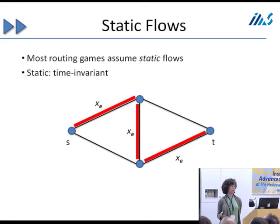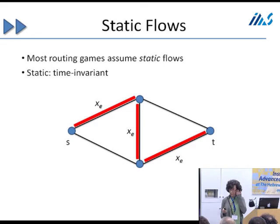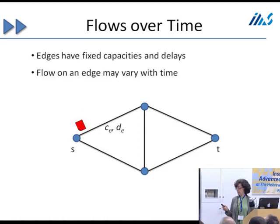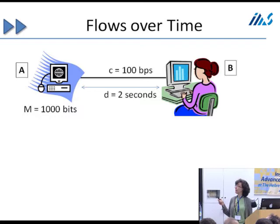This has been studied a lot in static networks where the flow is time invariant — fixed and repeating over time, the same flow all the time. We're interested in a different model where flow takes time to travel. We'll have a fixed capacity on the edge and a fixed delay for the edge, and the flow on the edge may vary with time.